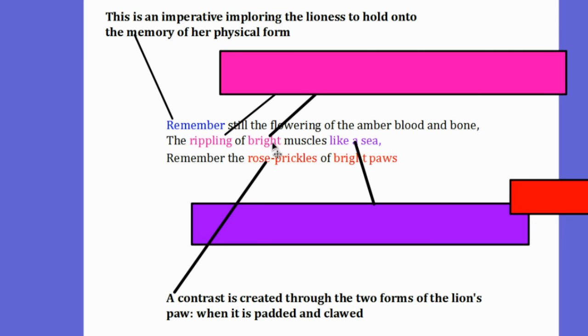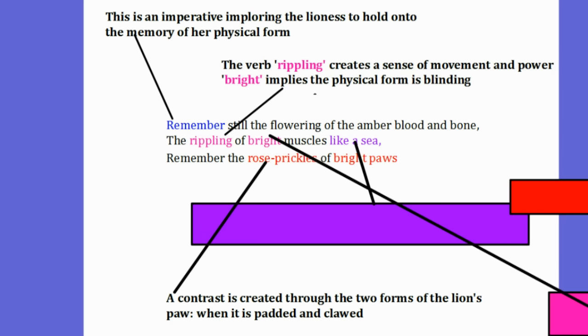The words rippling and bright gives us this idea of this muscular lion's body glistening in the sun with the rippling muscles kissing the rays of the sunlight. So here the word rippling creates a sense of movement and power,